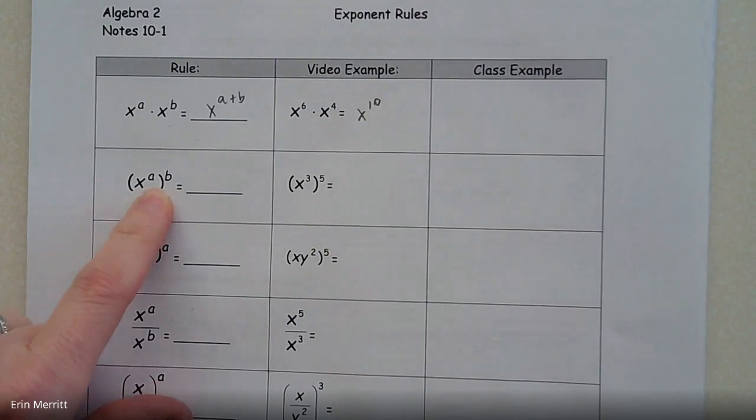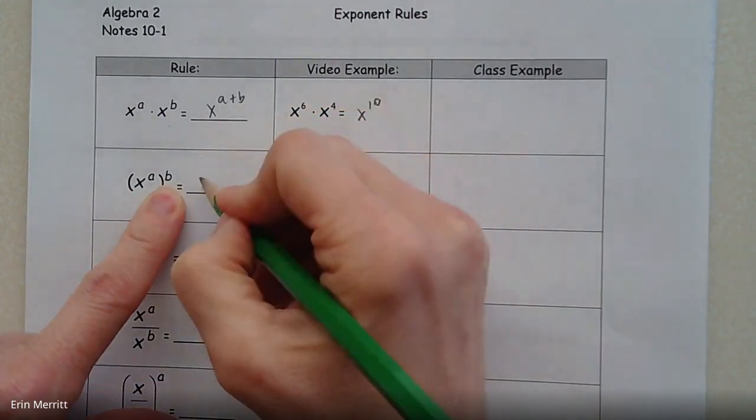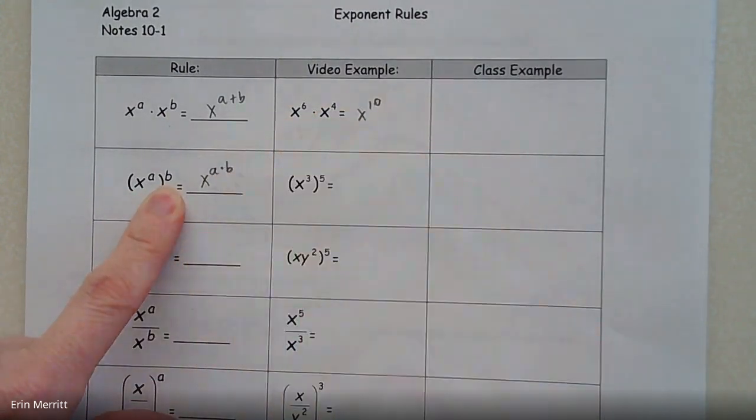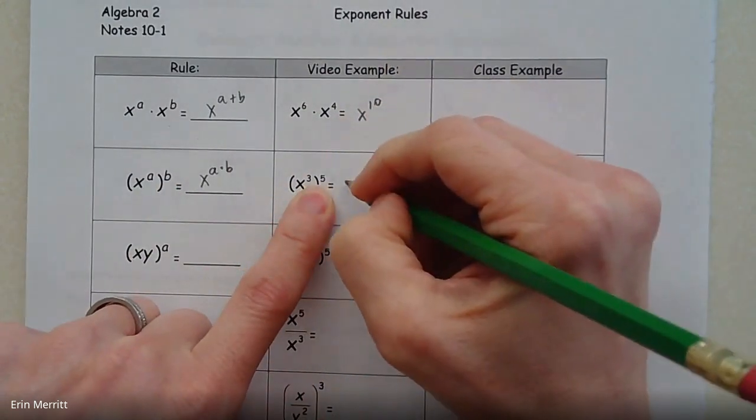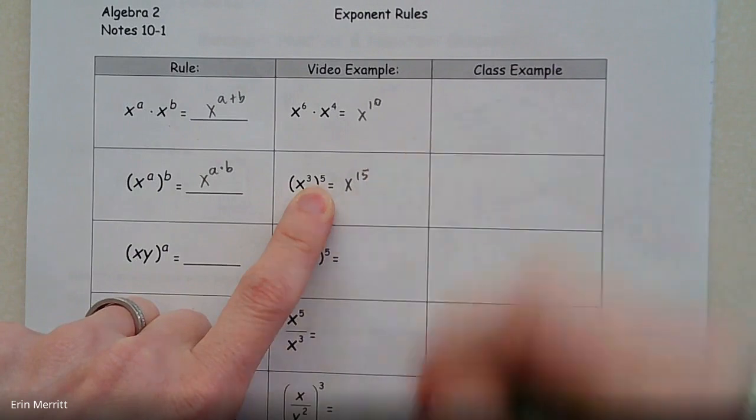All right, next one. When we have a power raised to a power, the rule is to multiply the exponents. So for our example here, 3 times 5, we're going to get x to the 15.